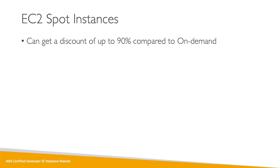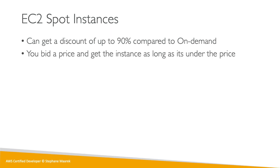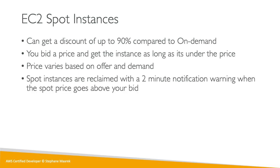Spot instances can give a discount of up to 90% compared to on-demand — the steepest discount. We have to bid, and we get the instance as long as its current market price is under our bid. If we get outbid, we lose the instance. The price varies based on offer and demand. When spot instances are reclaimed, we get a two-minute notification, and then we lose the instance — we have to shut down our work within those two minutes.